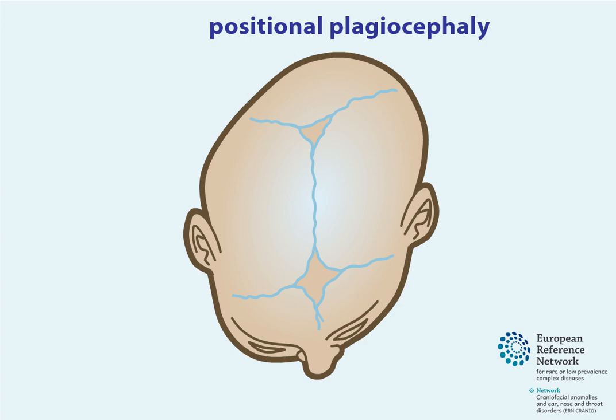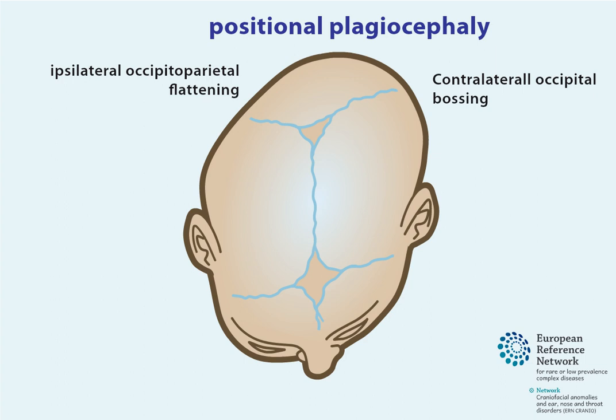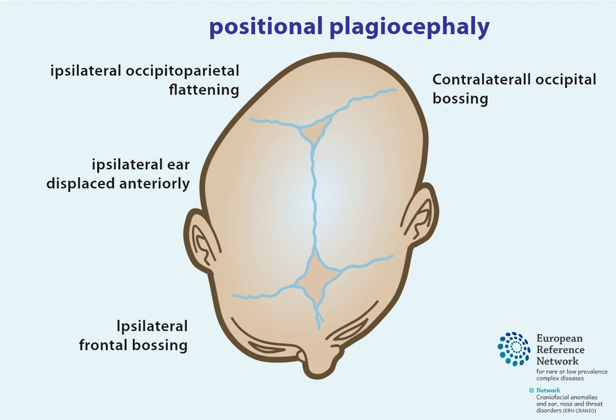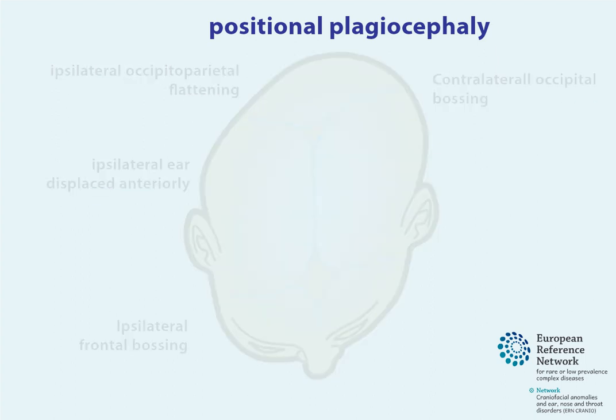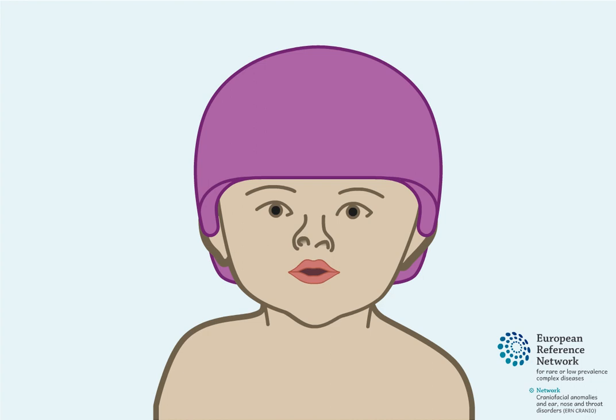Positional plagiocephaly. Positional or deformational plagiocephaly is very common and results from repeated external pressure on the developing skull. It is most often confused with craniosynostosis, as both conditions present a plagiocephalic head-shaped deformity. However, positional plagiocephaly is more a parallel displacement of the head and does not affect the skull sutures and thereby brain growth or development. It will generally be resolved through physiotherapy or helmet therapy, or both.